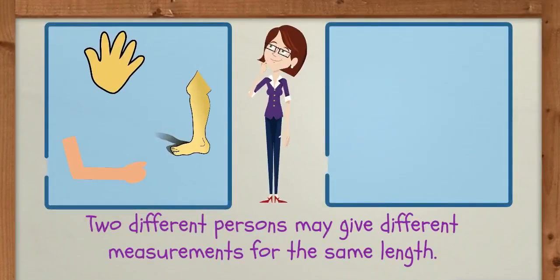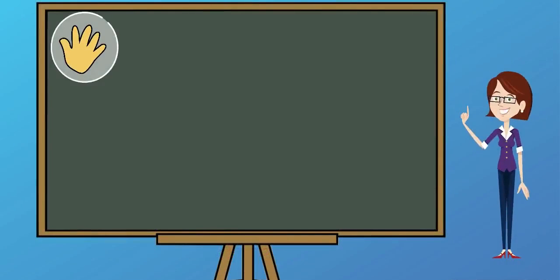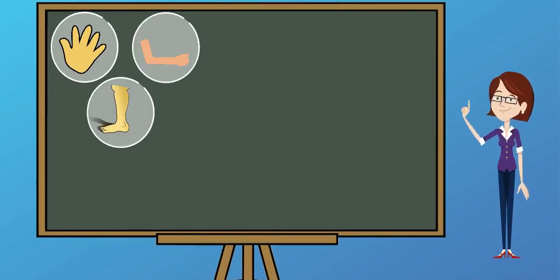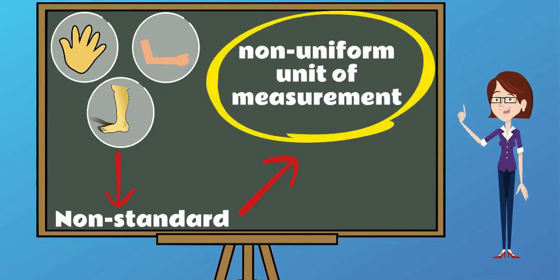Two different persons may give different measurements for the same length. Therefore, handspan, cubit, and foot span are the examples for non-standard, non-uniform unit of measurement.